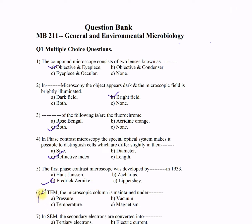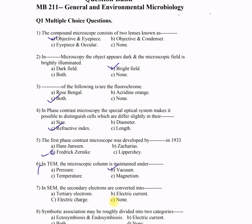Question 6: In TEM, the microscopic column is maintained under — A) pressure, B) vacuum, C) temperature, D) magnetism. The correct answer is option B — vacuum. This was a simple, direct question.